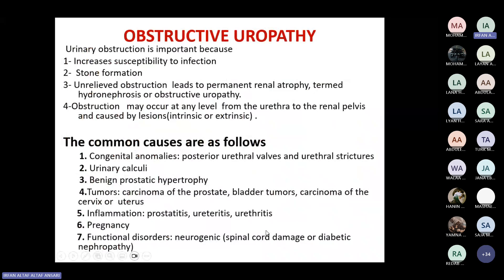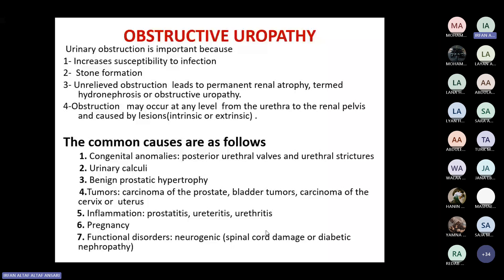Now we go to obstructive uropathy. Obstruction is important because whenever there is obstruction, there is increased susceptibility to infection and increased stone formation. If the obstruction is not relieved, it will lead to pressure atrophy of the renal parenchyma — known as hydronephrosis or obstructive uropathy. Obstruction may occur at any level from the urethra to the renal pelvis, caused by either intrinsic or extrinsic lesions.